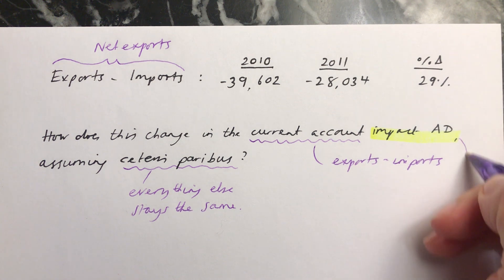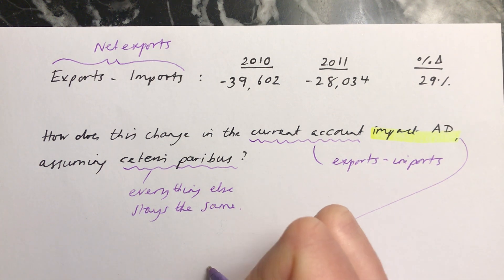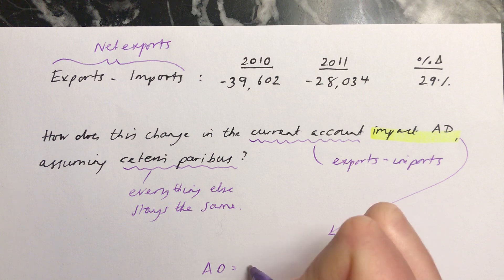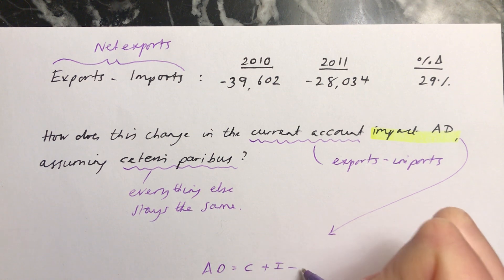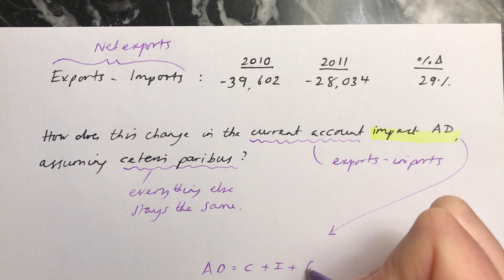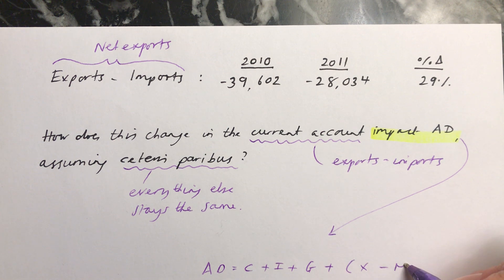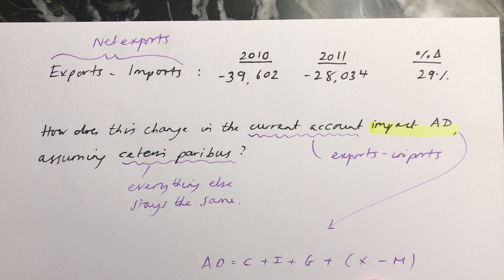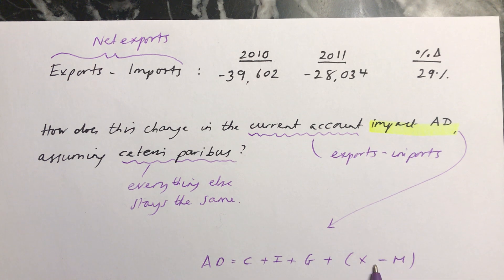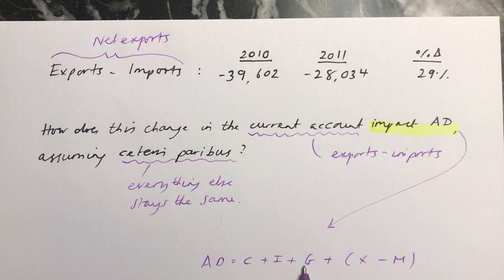We know that the formula for aggregate demand is consumption plus investment plus government spending plus exports minus imports. This section — exports minus imports — is what we have information about in our question. It's saying: if all of these — consumption, investment, government spending — stay the same, but we've got this change in exports minus imports, what will happen to aggregate demand?